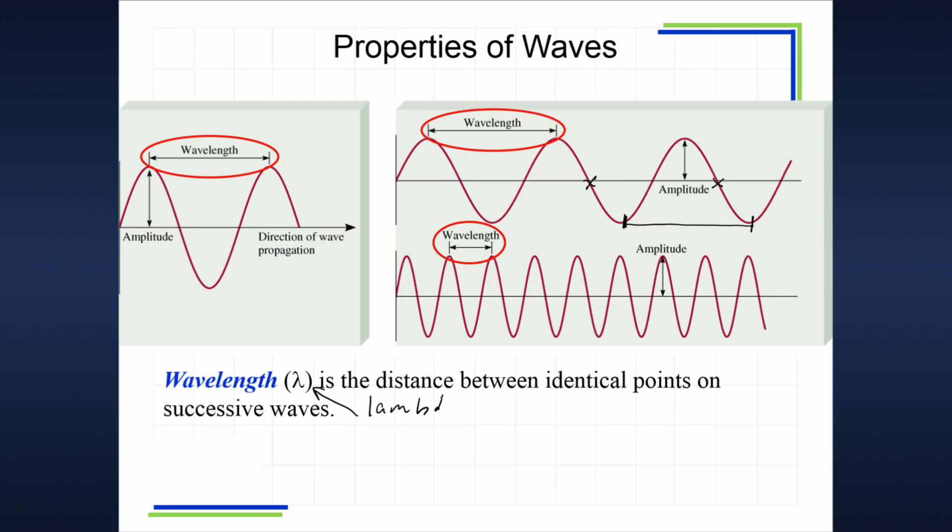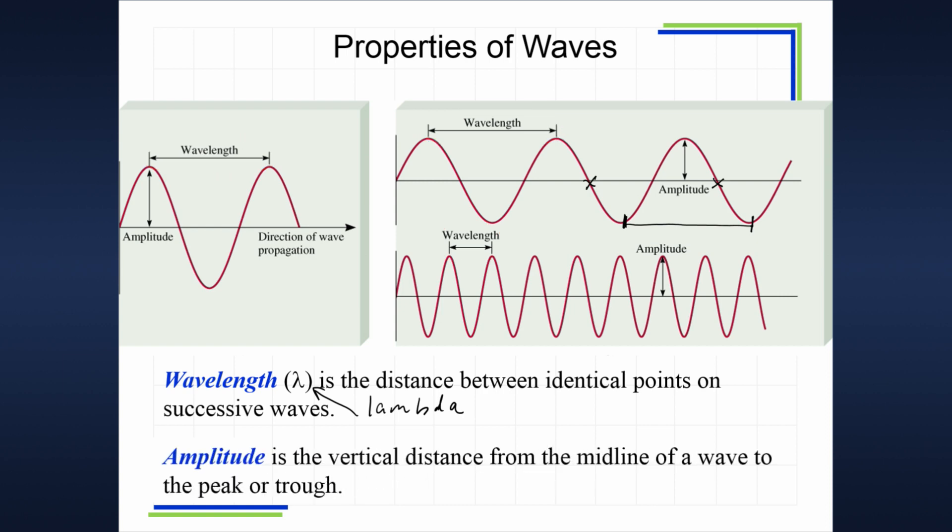The next property is amplitude. Amplitude is the vertical distance from midpoint up to the peak, or from midpoint to the trough. It doesn't matter because that's the same distance. We see the amplitude being represented here, circled in red. That is the amplitude of the wave.